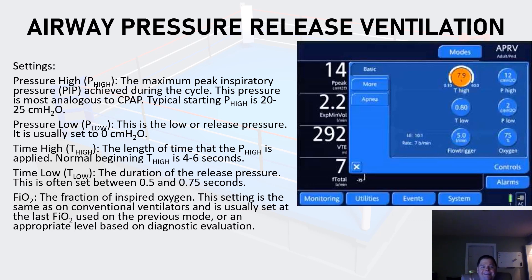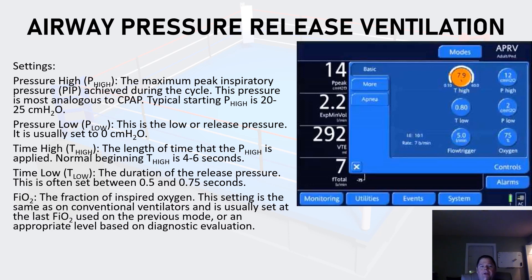A brief primer on APRV settings: you have a high pressure, a low pressure, a high time, and a low time — exactly what they sound like. The P high is the maximum peak inspiratory pressure achieved during the cycle — this is the CPAP pressure — with a typical starting P high of 20 to 25. The patient can breathe over this pressure just like in CPAP, getting their tidal volume on top of that baseline. The P low is the release pressure, usually set to zero, to give the patient time to breathe all the way back down. Even though the release times are very short, this is where CO2 comes out — if you add pressure there, you get in the way of CO2 elimination.